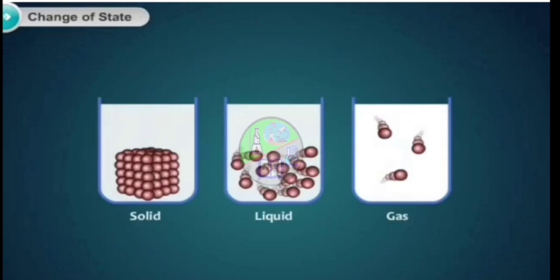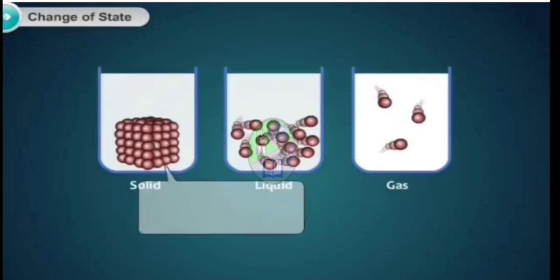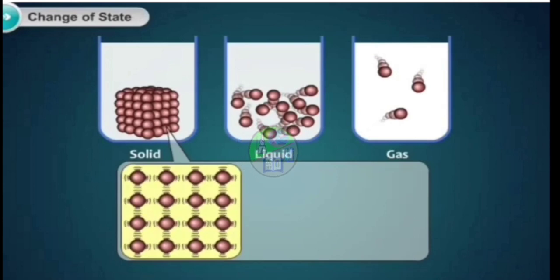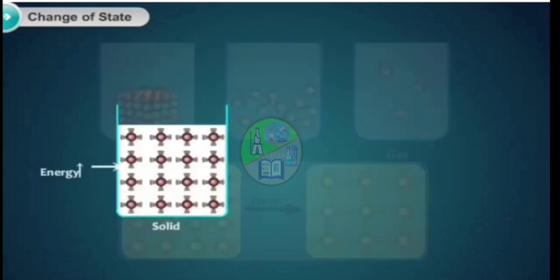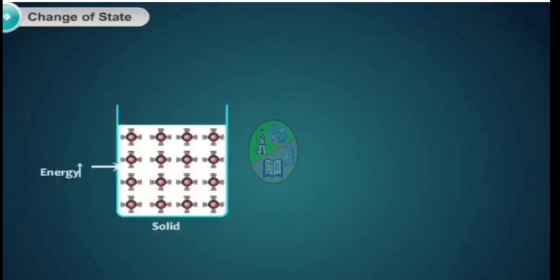Molecules present in the solid are in the state of slow vibrations. When heat is added to the molecules, they start vibrating vigorously. As the energy absorbed increases, the vibration also increases, resulting in the breaking of some of their bonds and the solid melts.